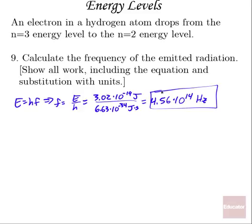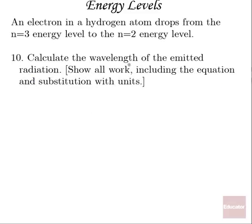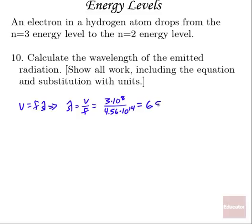All right, two more. Calculate the wavelength of the emitted radiation. Well, velocity is frequency times wavelength, which implies that wavelength equals velocity over frequency. Our velocity is 3 times 10 to the eighth meters per second, divided by our frequency, 4.56 times 10 to the 14th hertz, gives us a wavelength of about 6.58 times 10 to the minus 7 meters, or 658 nanometers.